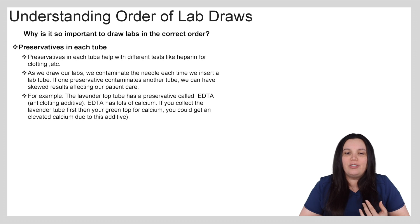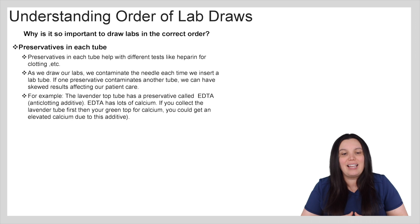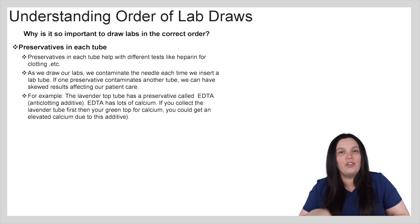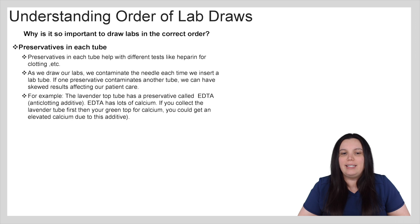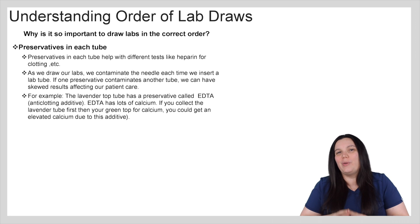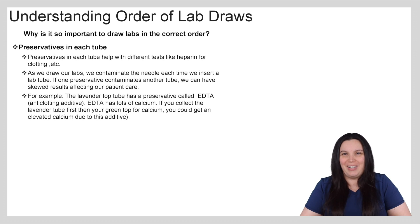If one preservative contaminates another tube we can have skewed results affecting what we do in patient care. For example the lavender top tube has a preservative called EDTA, it's an anti-clotting additive. EDTA has lots of calcium. If you collect the lavender tube first then your green top for calcium you're going to get an elevated calcium due to this additive. So it's extremely important that these labs are done consistently and in the right order in order to properly treat our patients.